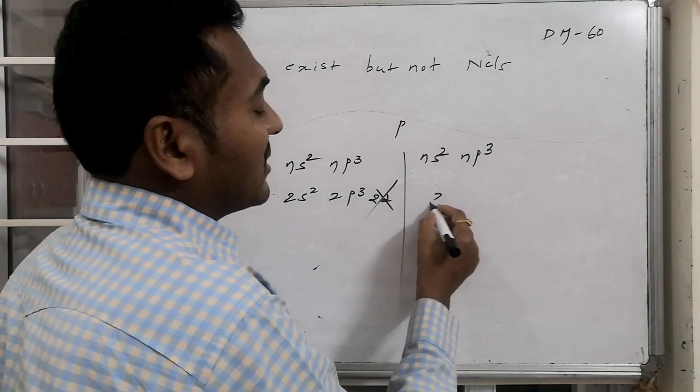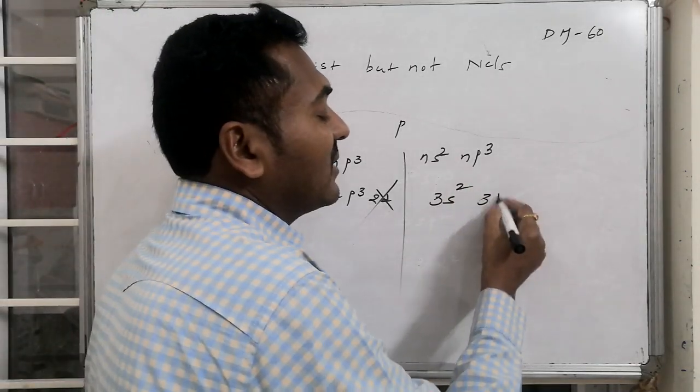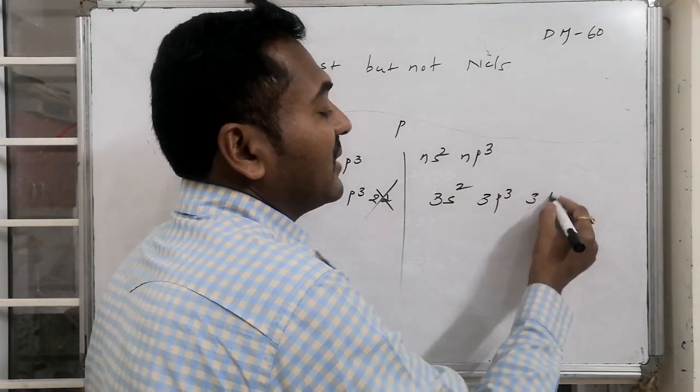But if we go for phosphorus, the outer orbital configuration is 3S2 followed by 3P3. It is also associated with 3D orbitals.